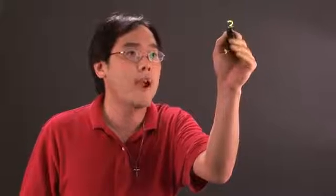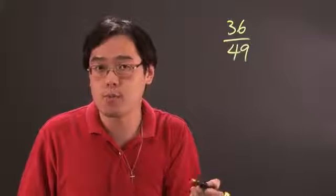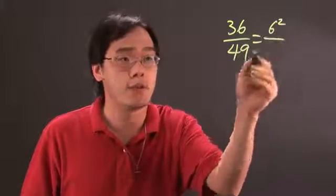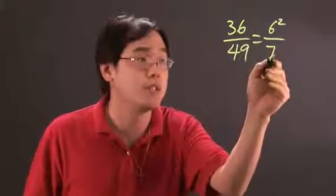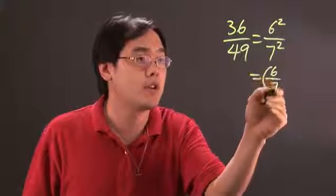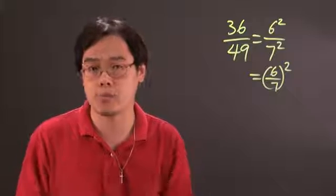So if you have a fraction like 36 over 49 for example, is 36 a perfect square? It actually is, it's 6 squared. Is 49 a perfect square? It actually is because it's 7 squared. So this can be rewritten as 6 over 7 quantity squared. So 36 over 49 is a fraction that's a perfect square.